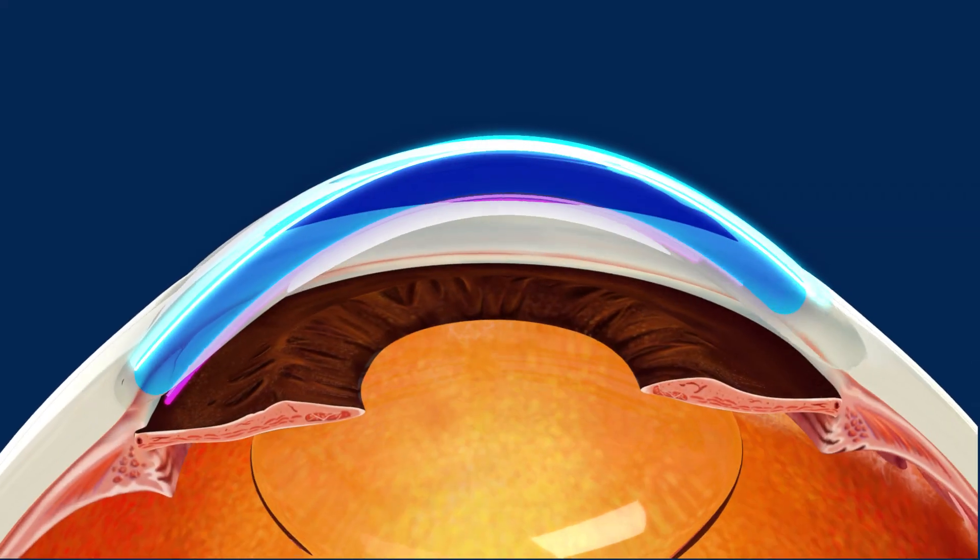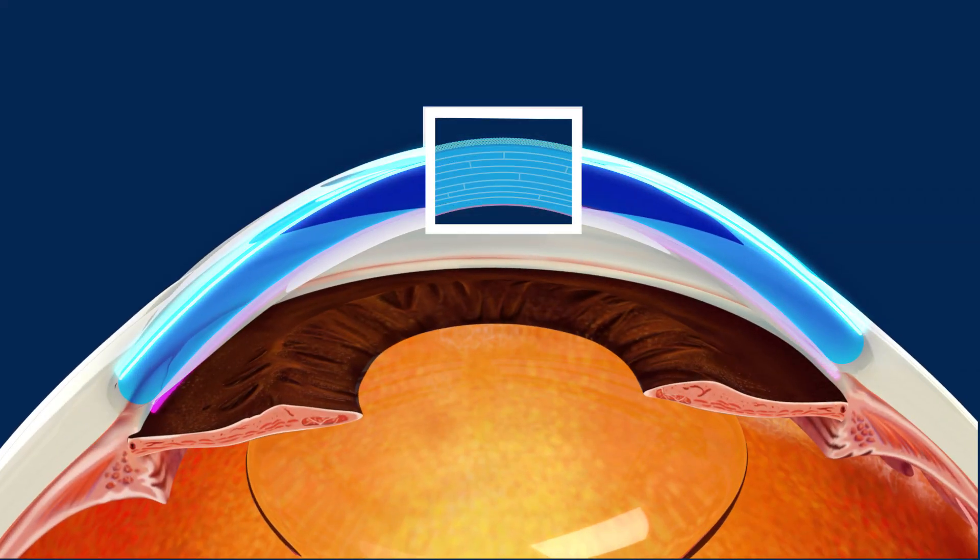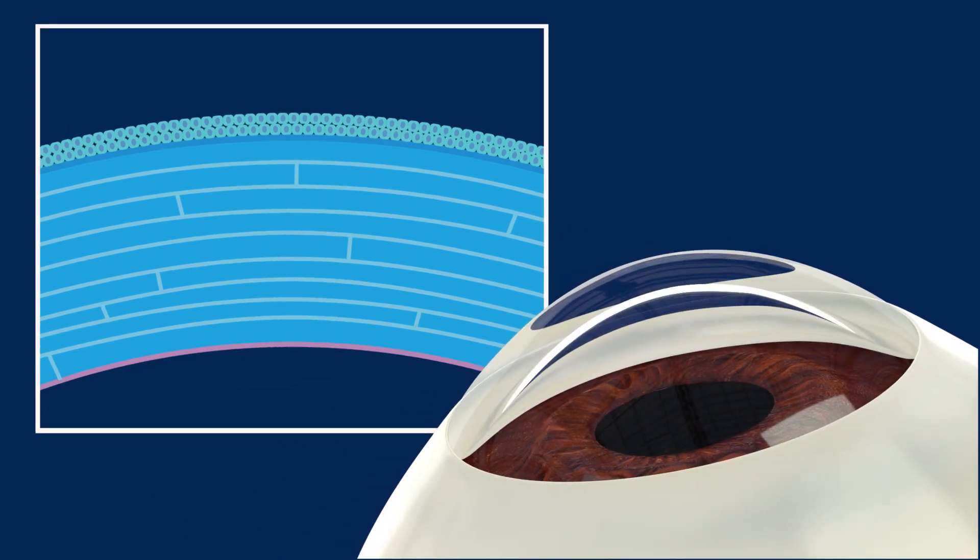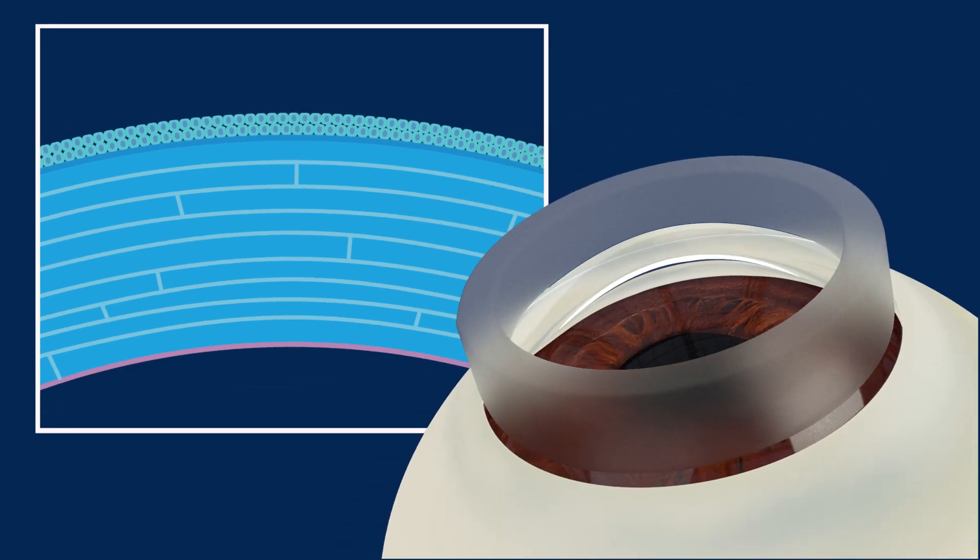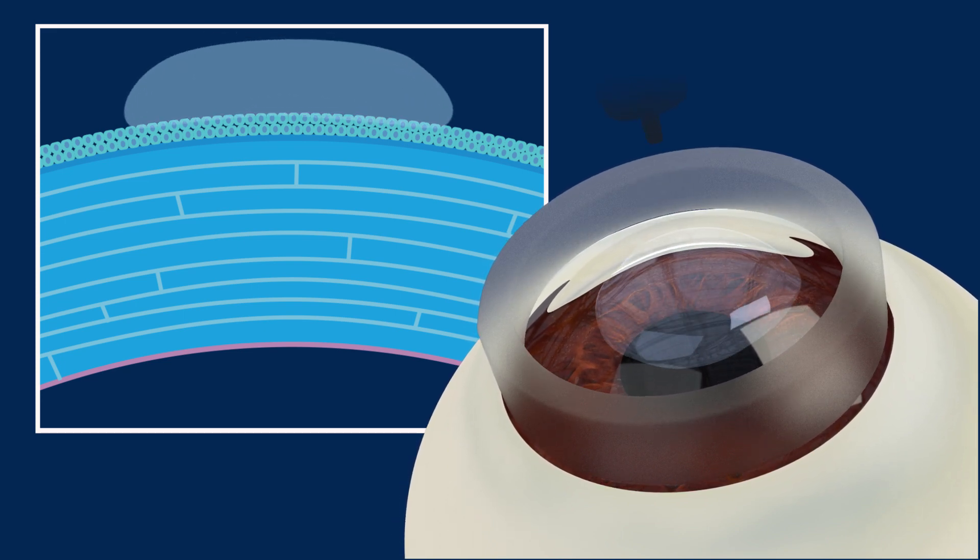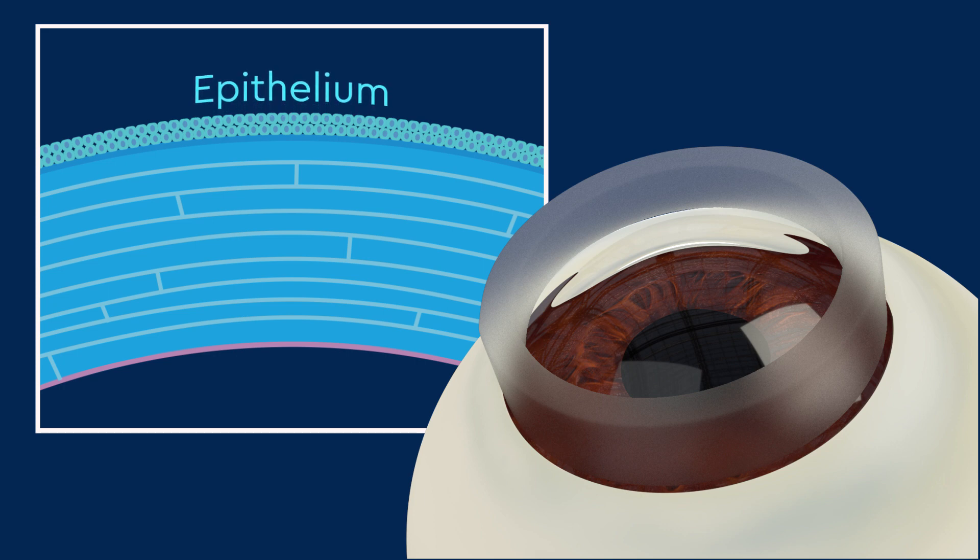The cornea has layers, and corneal crosslinking works by strengthening some of those layers. Your surgeon begins by placing a ring on the cornea and applying alcohol eye drops to loosen the outermost layer, called the epithelium.